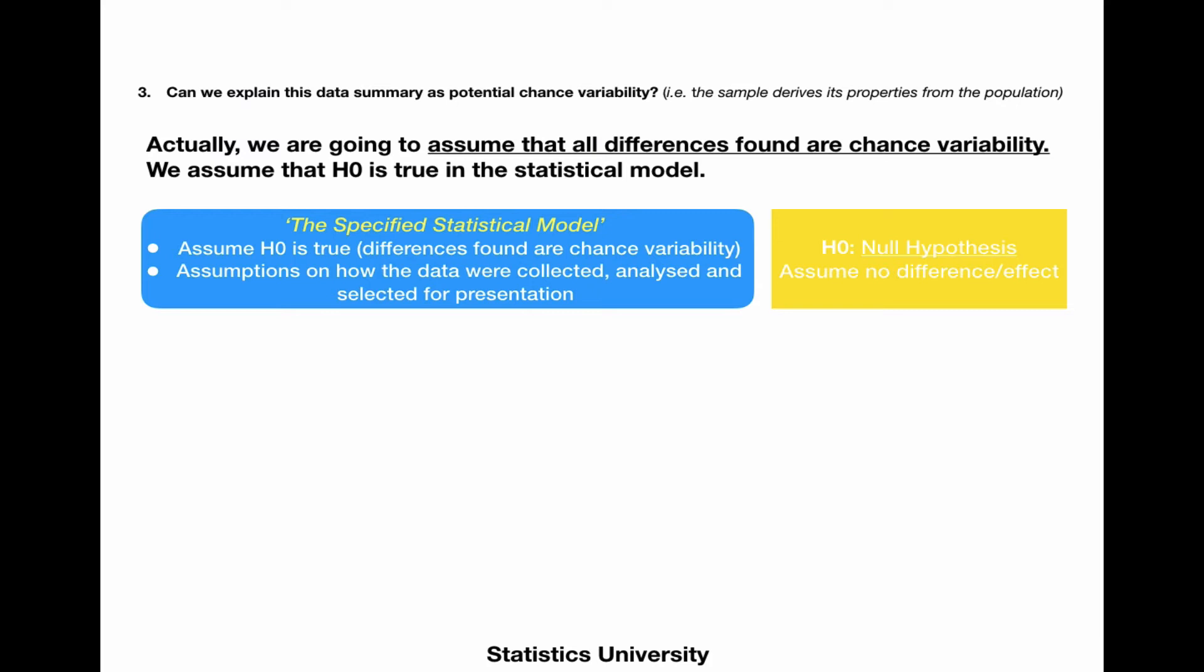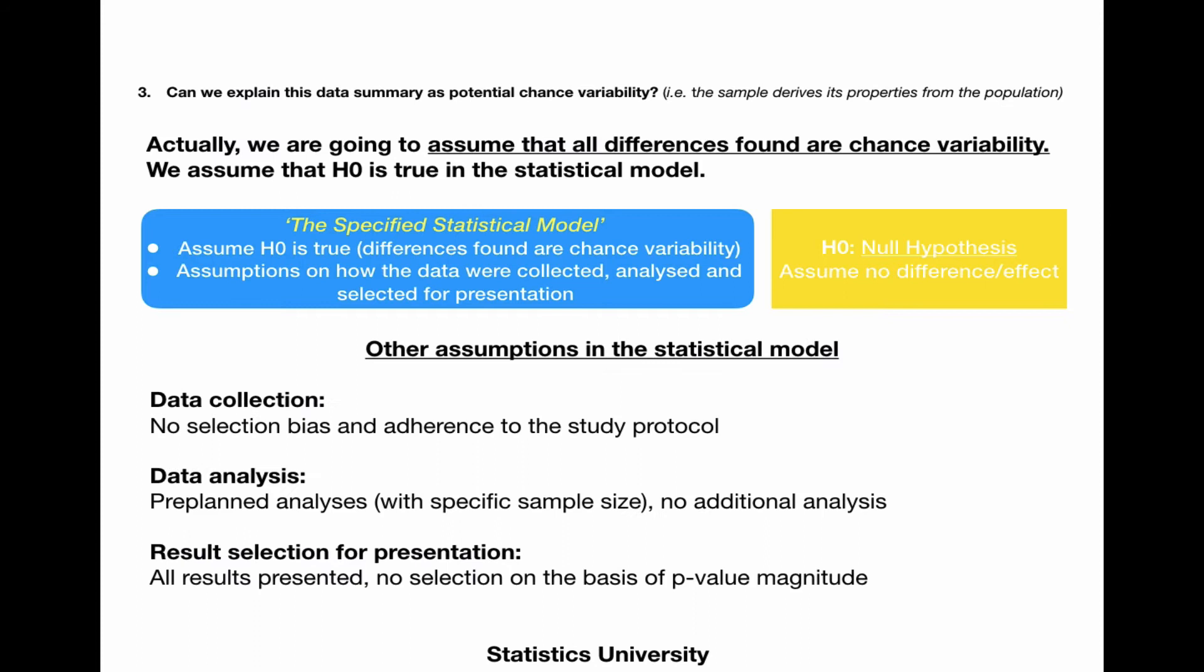The next step is that we want to know whether we can explain the data summary as potential chance variability, but we're actually going to assume that all differences found in our study are chance variability, because we assume that the null hypothesis is true in the statistical model.